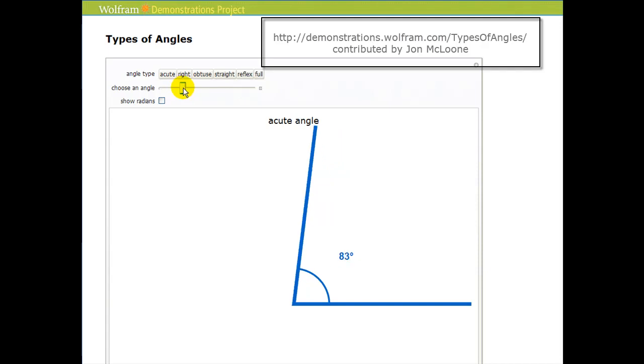As soon as the angle reaches 90 degrees, this is a special angle called a right angle. And you can see it forms a corner.